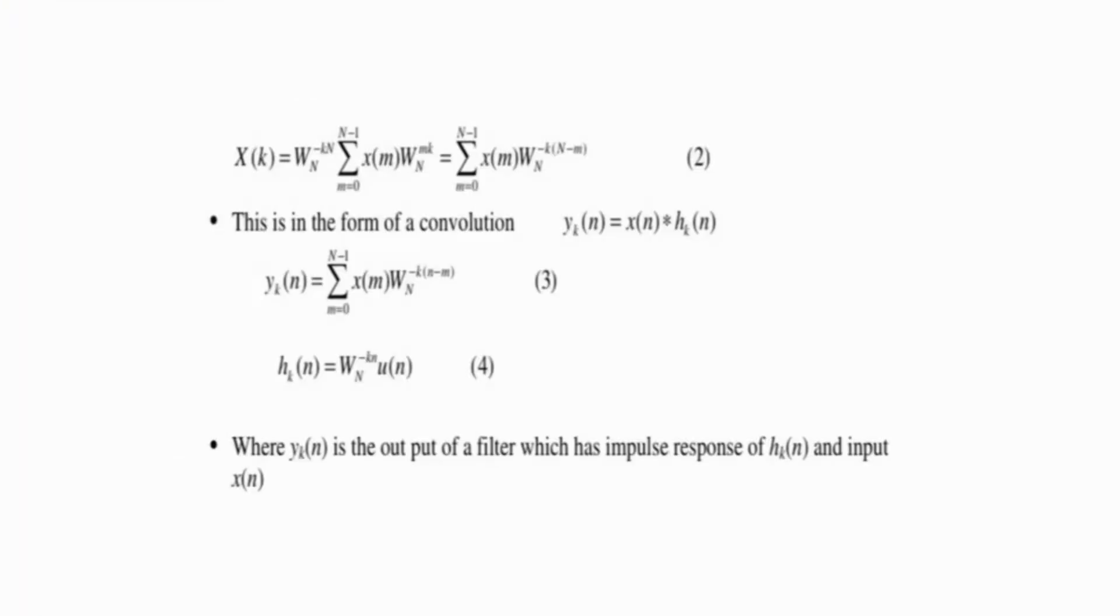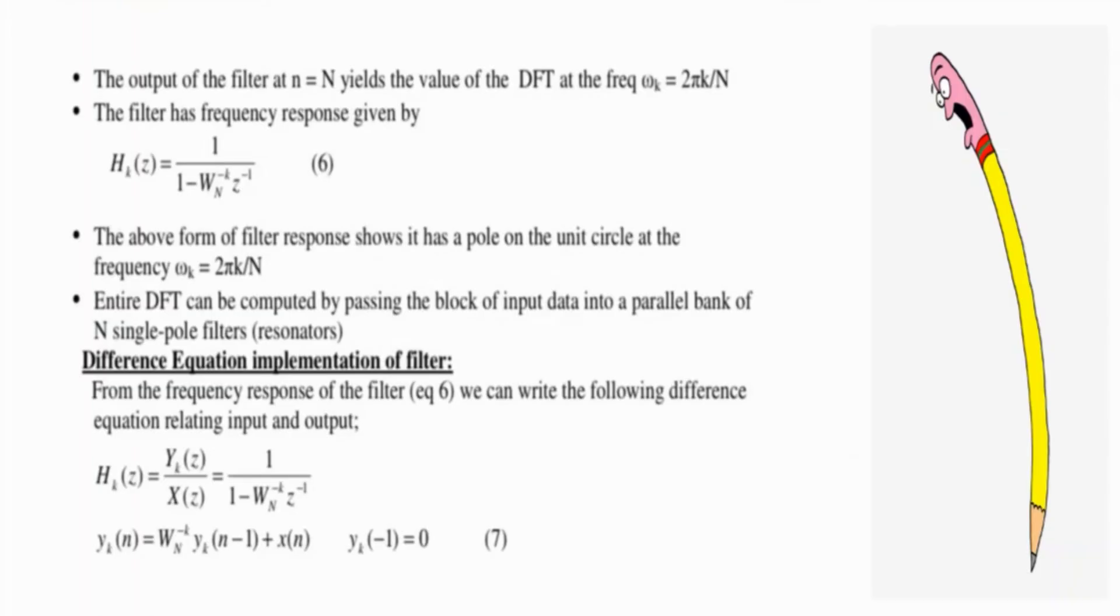This is in the form of a convolution where y_k(n) is the output of the filter which has impulse response h_k(n) and input x(n). The output of the filter at n = N gives the value of the DFT coefficient. The filter has transfer function with a pole on the unit circle at frequency ω_k = 2πk/N, and the DFT can be computed by passing the input data through a parallel bank of N single-pole filters.